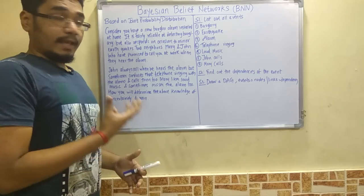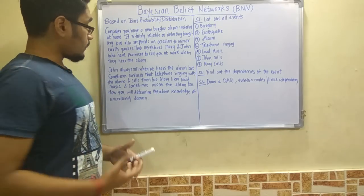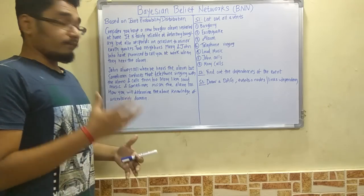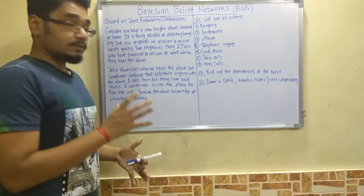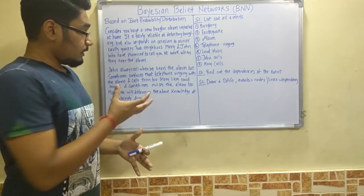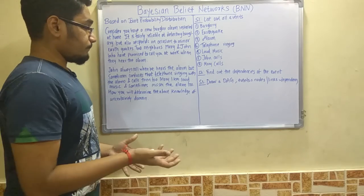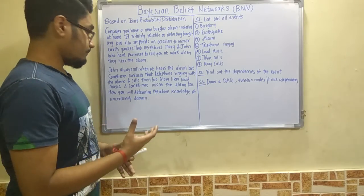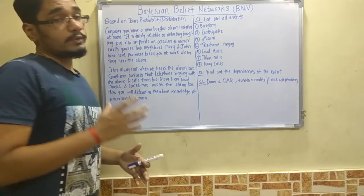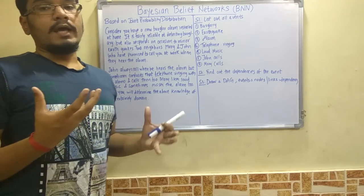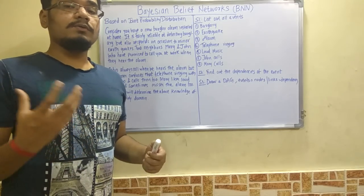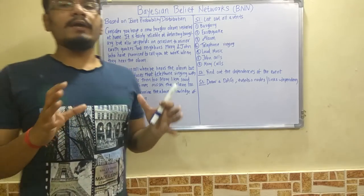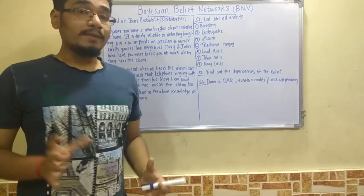There are two neighbors, Mary and John, who have promised to call you at work when they hear the alarm. John always calls when he hears the alarm, but sometimes he confuses the telephone ringing with the alarm. Mary loves loud music and sometimes misses the alarm. The problem is: how do you represent the knowledge of this uncertain domain and incorporate it into a robot using a Bayesian network? We solve this in four steps.